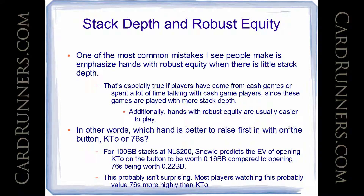Well, the answer probably is that with 7-6 suited, it's a lot easier to make a nut-type hand than with king-ten offsuit. So if you have 100 big blinds of stack depth and you want to win a really big pot, you're probably going to need to make something like a flush or a straight, which 7-6 suited is a lot better at doing than king-ten offsuit. So because we have all that stack depth, 7-6 suited is overall a more profitable hand to open with than king-ten offsuit, despite the fact that king-ten offsuit has a lot more raw equity. 7-6 suited's equity is more robust — it can make hands that are very strong and will win at showdown even against a really strong range.